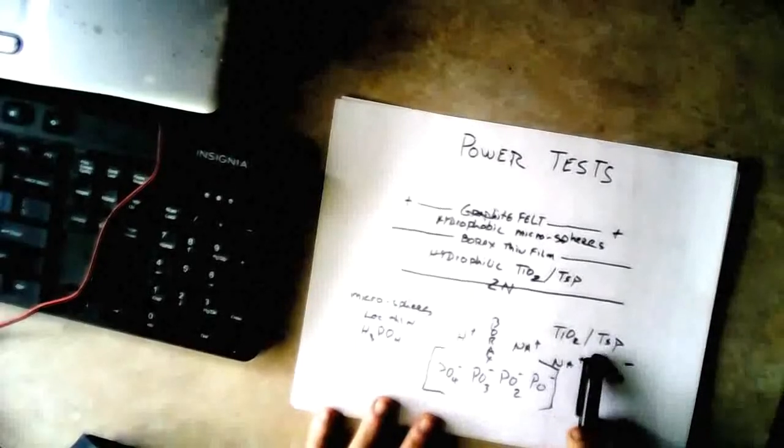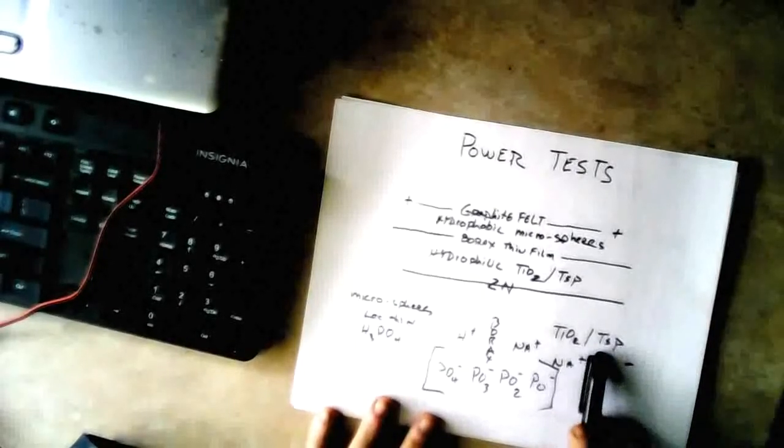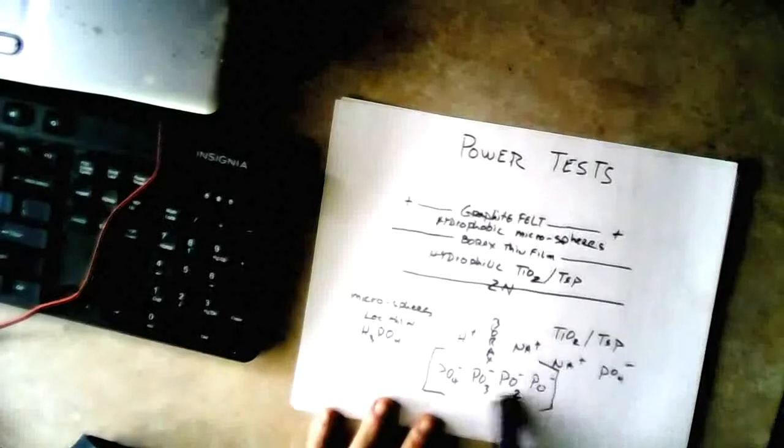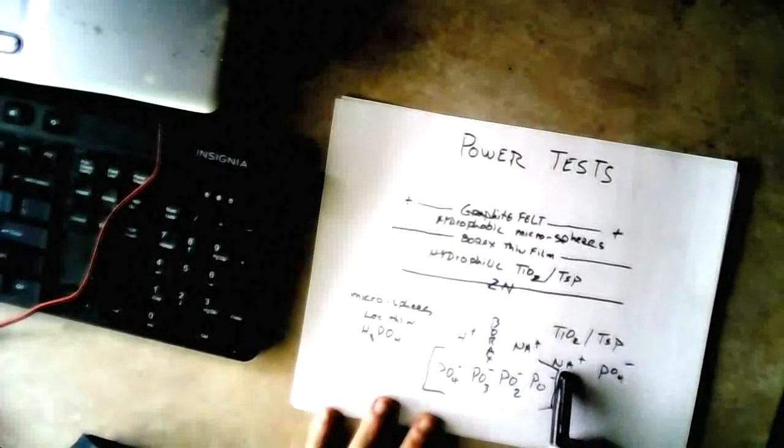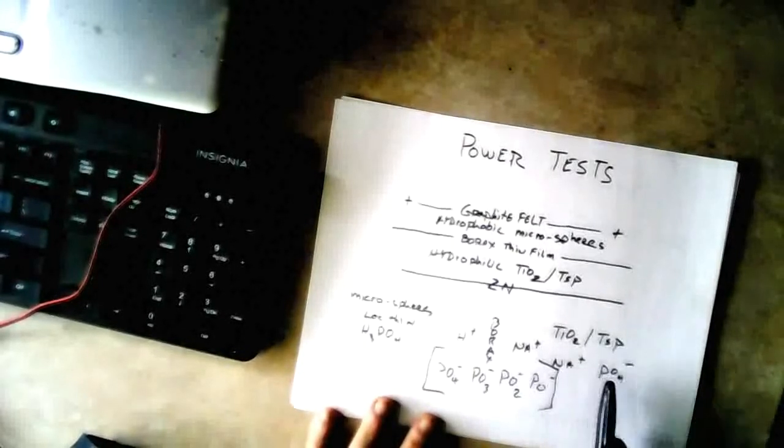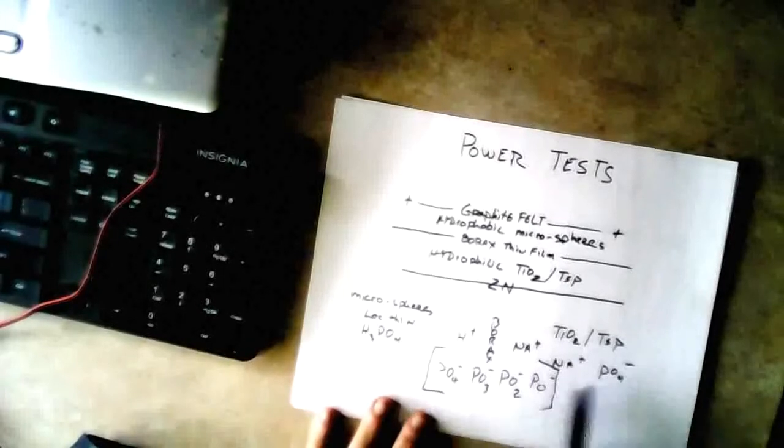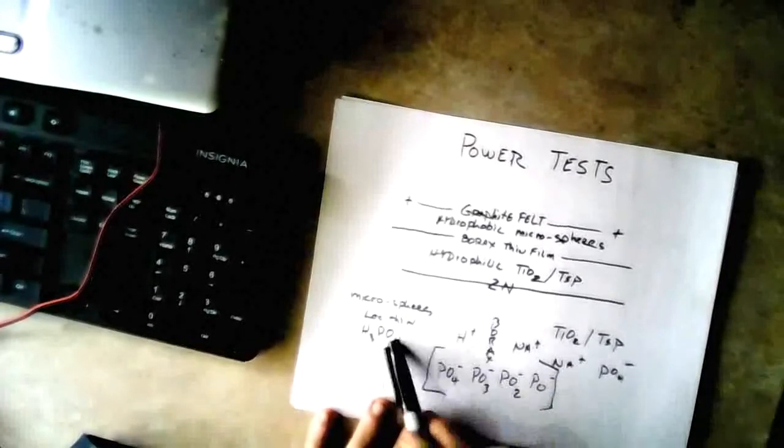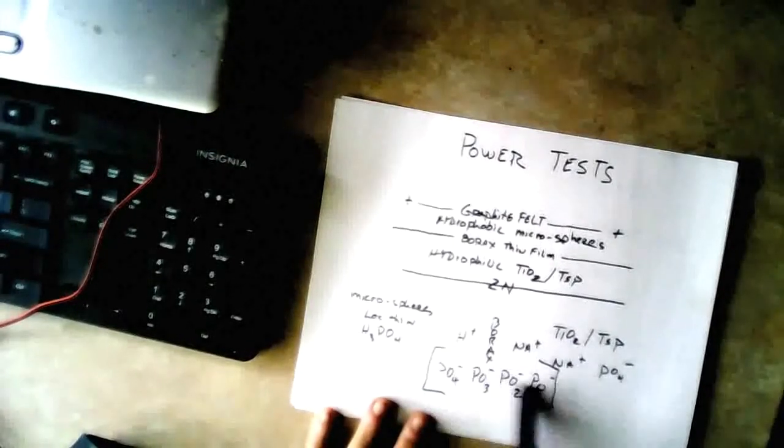On the negative side, trisodium phosphate is also phosphate ions. It uses sodium positive ions with negative phosphate ions. So we've got the same negative ions on both sides of the cell.